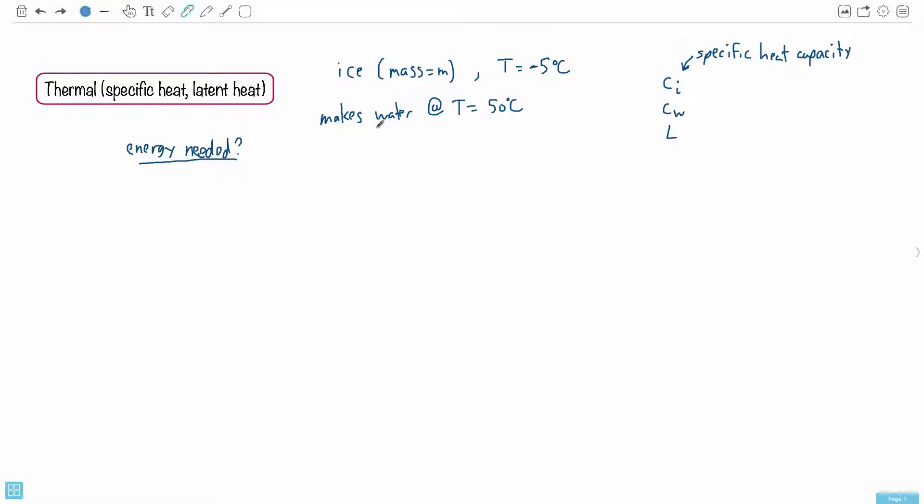So in this question, this is about thermal physics, and it's actually about specific heat and latent heat. We're told that we have ice with mass M. It's initially got a temperature of minus 5 degrees Celsius. You just leave it there and it ends up melting. You even add more energy to it, it makes water.